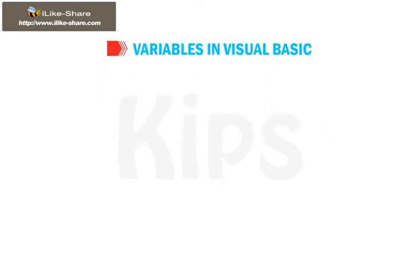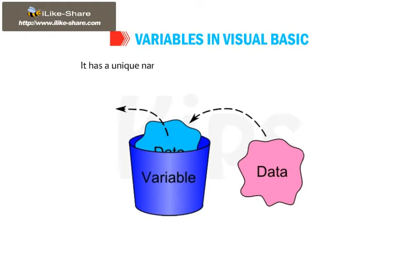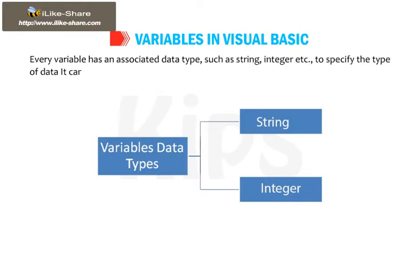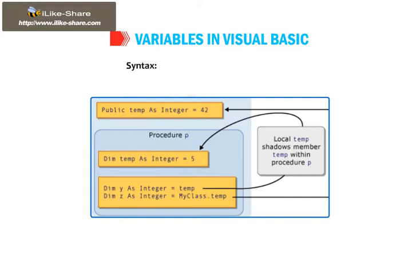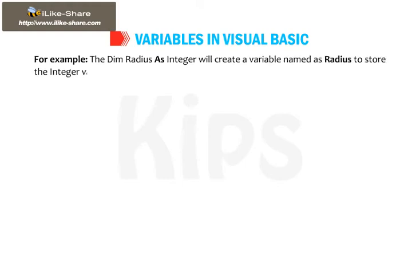Let us understand variables in Visual Basic. A variable refers to a named memory location used to store data temporarily. It has a unique name which is used to identify it in the program. Every variable has an associated data type such as string, integer, etc., to specify the type of data it can hold. The DIM statement is used to declare a variable in Visual Basic. Syntax: DIM variable_name as data_type. For example, DIM radius as integer will create a variable named radius to store integer values.